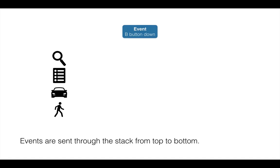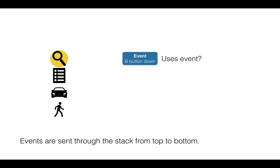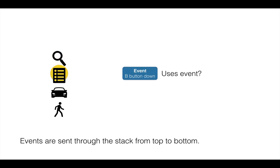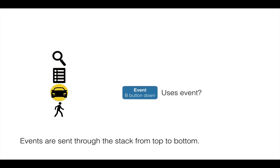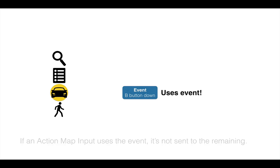While the game is running, events are sent through the stack from top to bottom. For each action map, we check whether it uses the event. For example, if the B button is pressed, we first check the debug actions — do they use it? No. Then the menu actions — do they use it? No. Then the vehicle actions — do they use it? Yes. If an action map uses the event, it is not sent to the remaining action maps further down the stack.